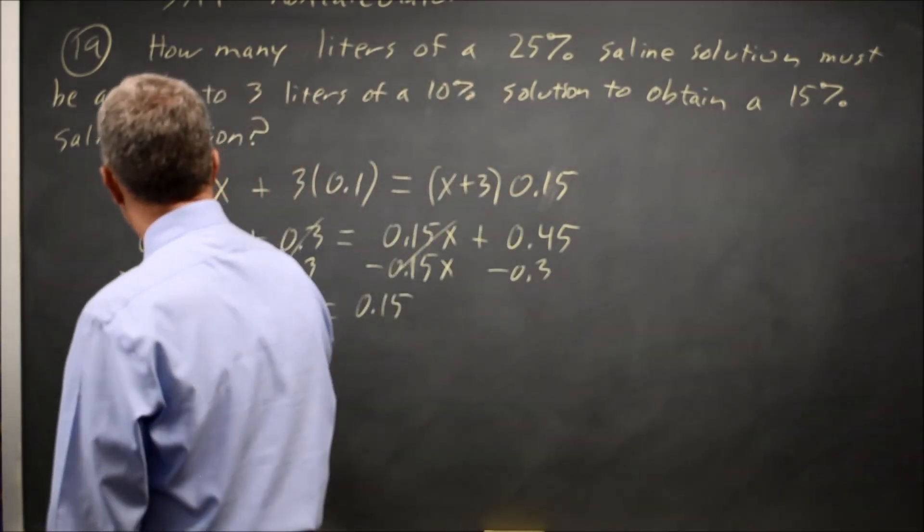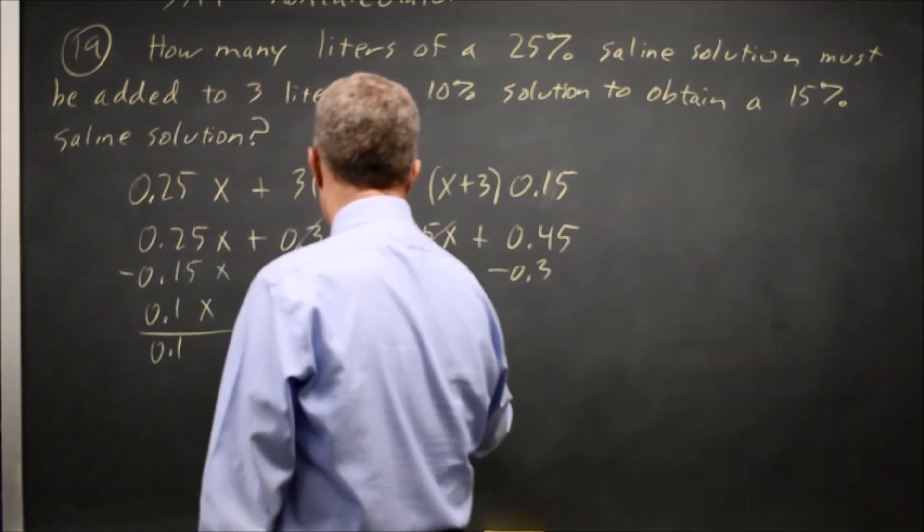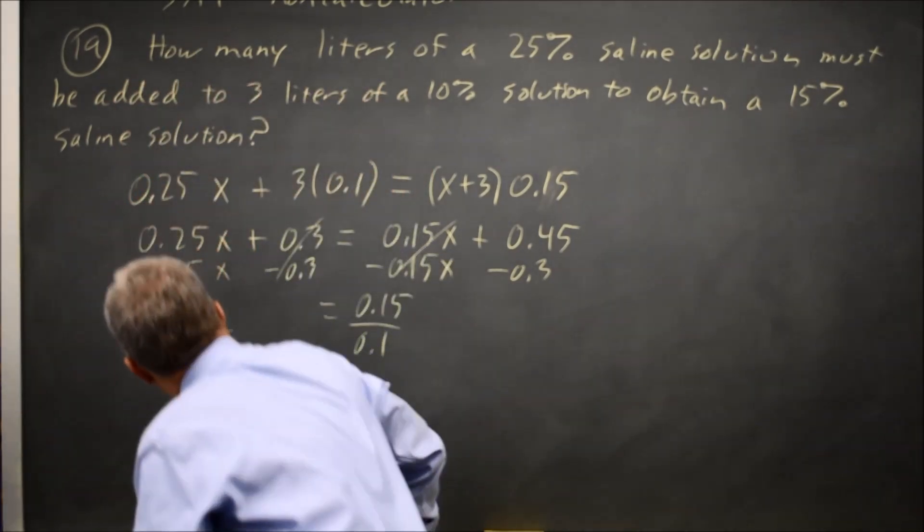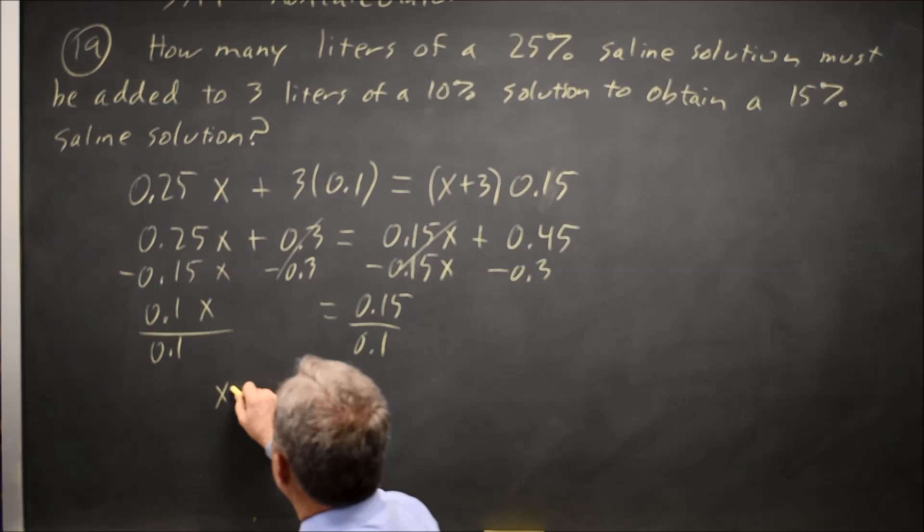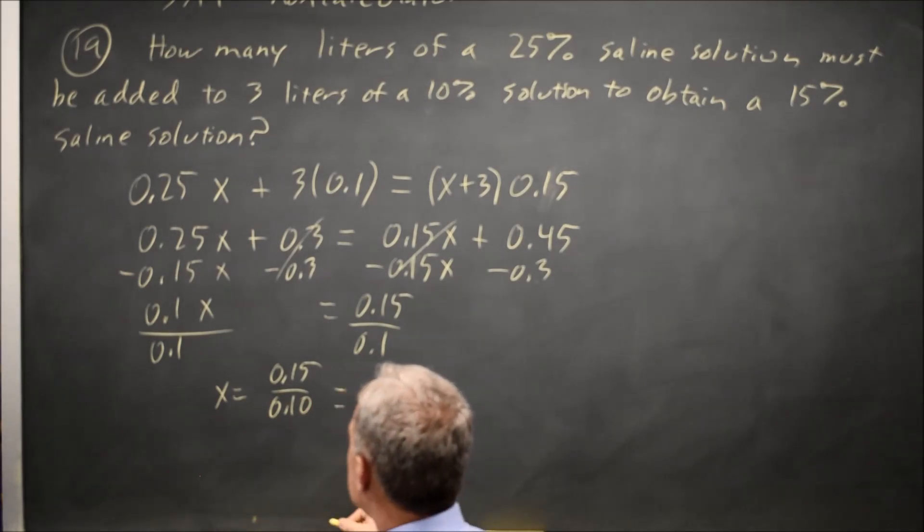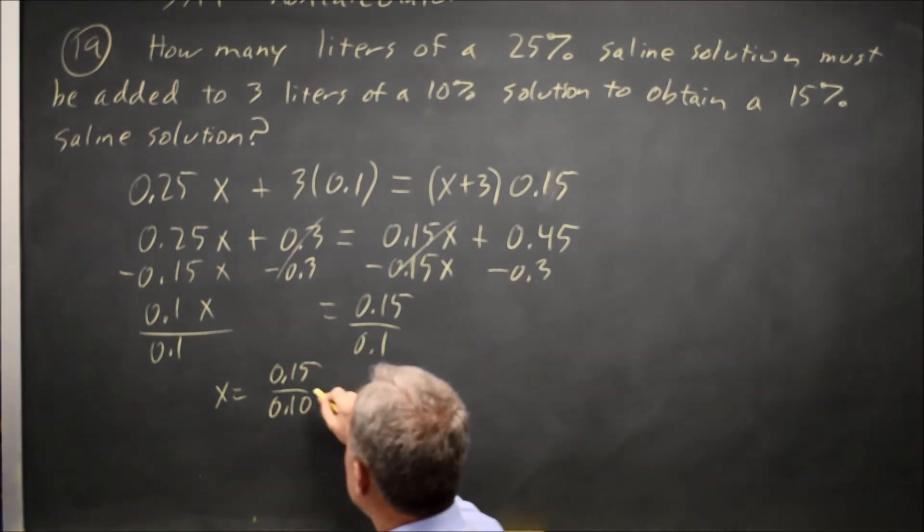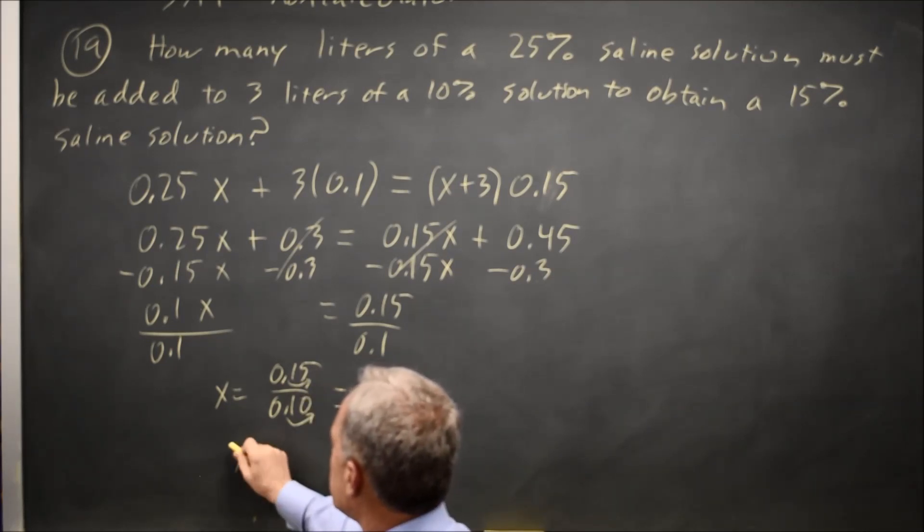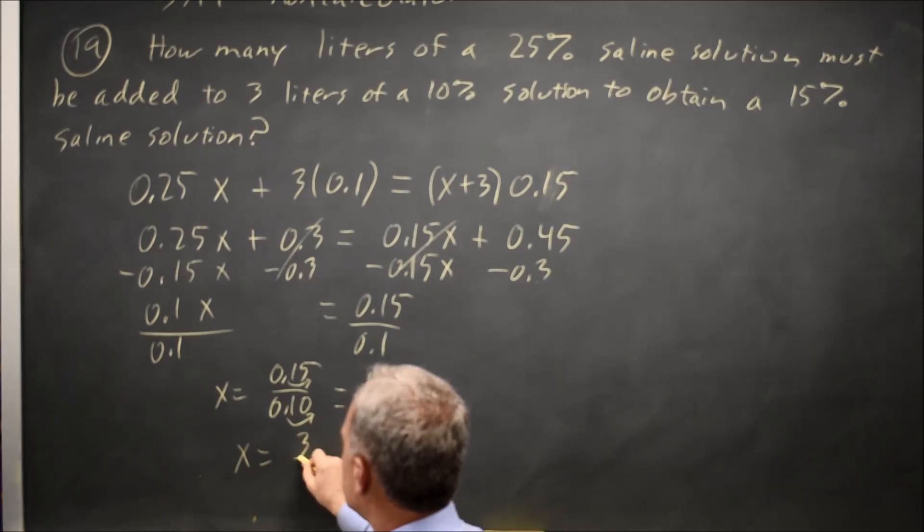Dividing both sides by 0.1, I get x equals 0.15 over 0.10. I'm just going to put in the 0, and that can be rewritten since I'm not fond of dividing decimals. Multiply this by 100, multiply this by 100, and we get 15 over 10, and I'm much happier with that. 15 over 10 is 3 over 2.